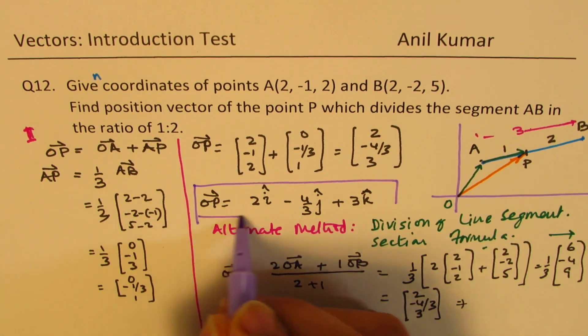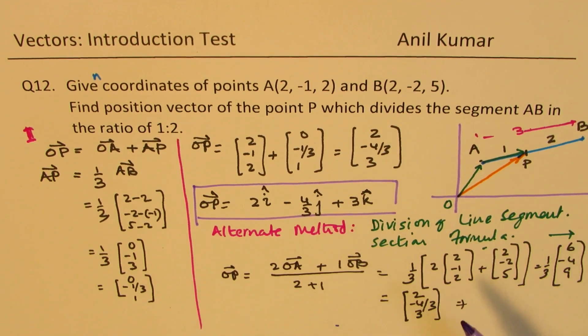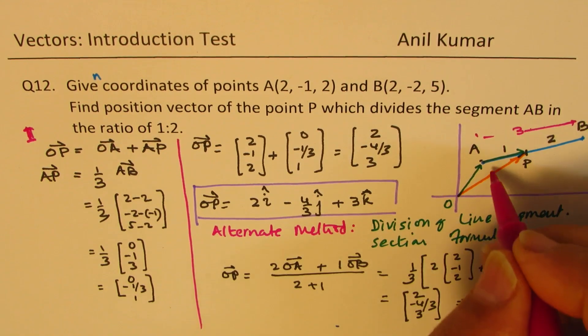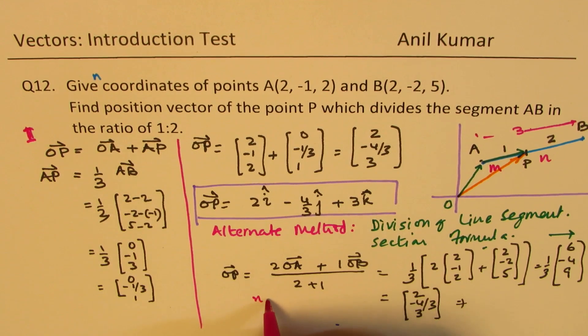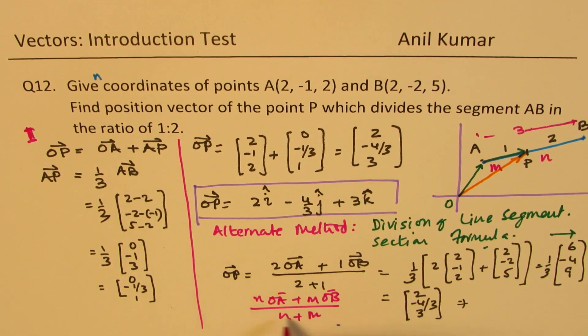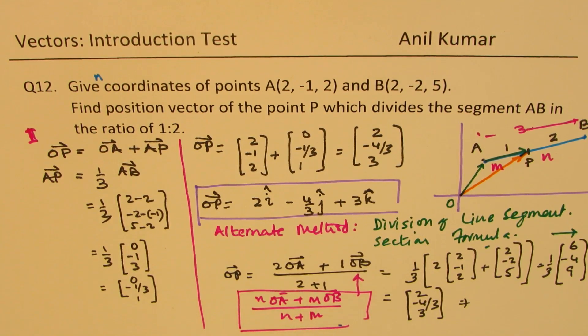I hope the steps are absolutely clear. Follow the method which you like. This is from basics, you understand how to do it. Here we have not derived the formula. Basically, the formula is that if the division is M is to N, in that case, N times OA plus M times OB over N plus M. That is the formula which we have used here.